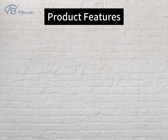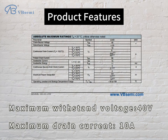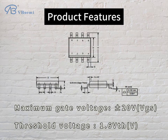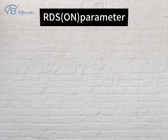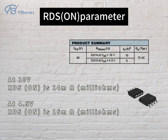Product features: maximum withstand voltage 40V, maximum drain current 10A, maximum gate voltage 20V. VGS threshold voltage 1.6V to 3V. RDS-ON parameter at 10V.